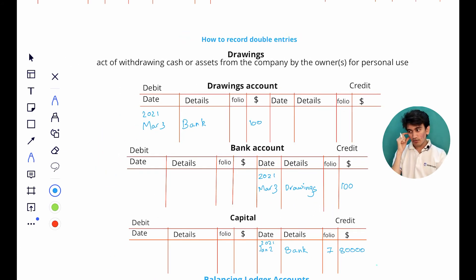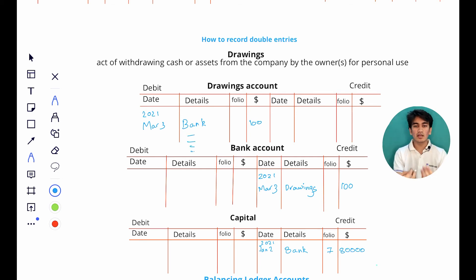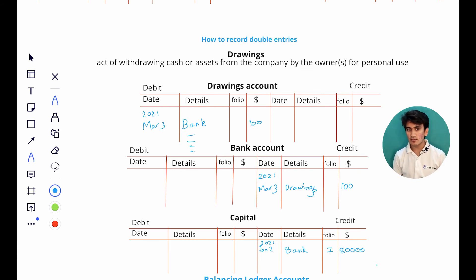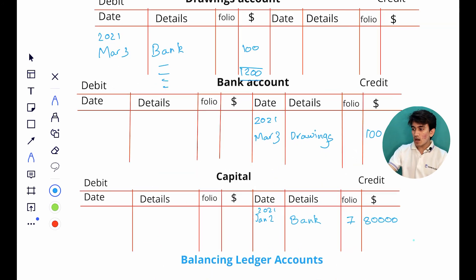Now let's say Alex keeps drawing one hundred dollars for all 12 months of the year. We'll have a total of 12 entries in our drawings account, and they'll add up to twelve hundred dollars. So twelve hundred dollars is the total amount of drawings that Alex is doing throughout the year.